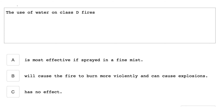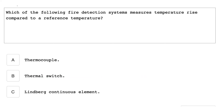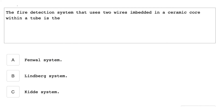The use of water on class D fires will cause the fire to burn more violently and can cause an explosion. Which of the following fire detection systems measures temperature rise compared to a reference temperature? Thermocouple. The fire detection system that uses two wires embedded in a ceramic core within a tube is the Kidde system.